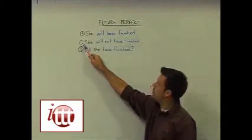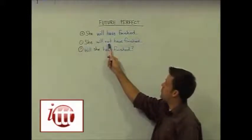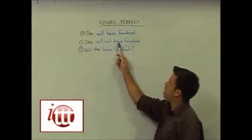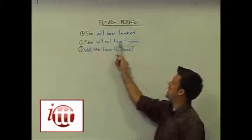In order to make the negative form, we simply add the word not between the word will and our helping verb have. She will not have finished.